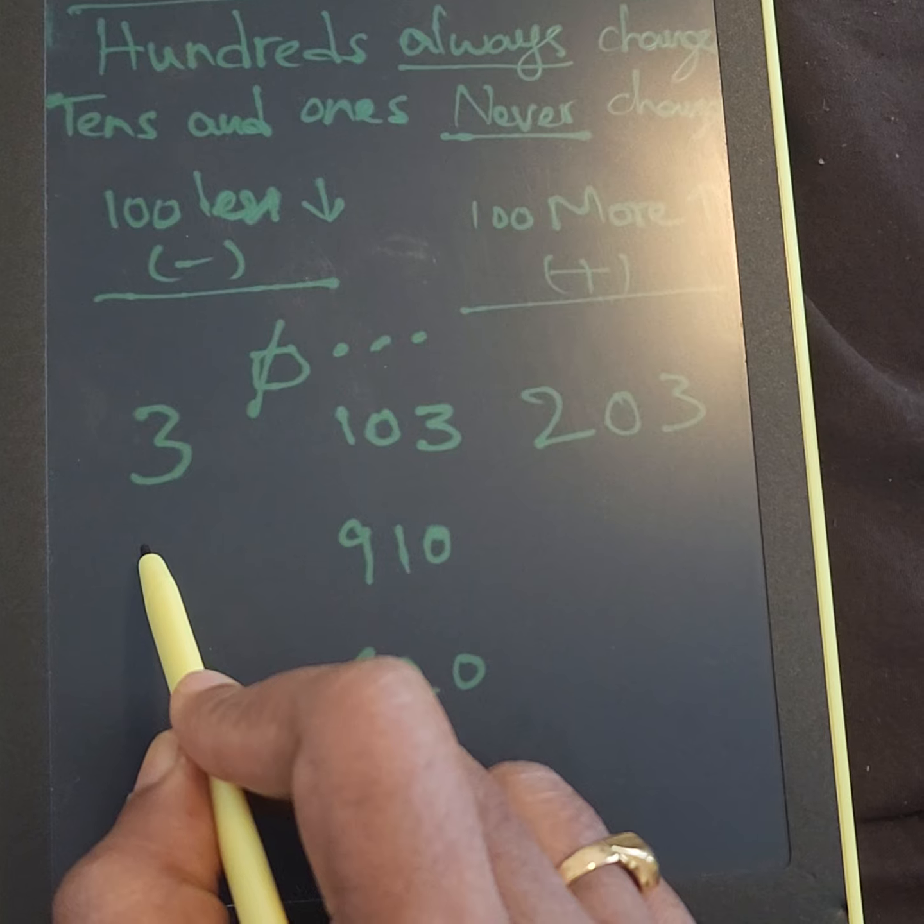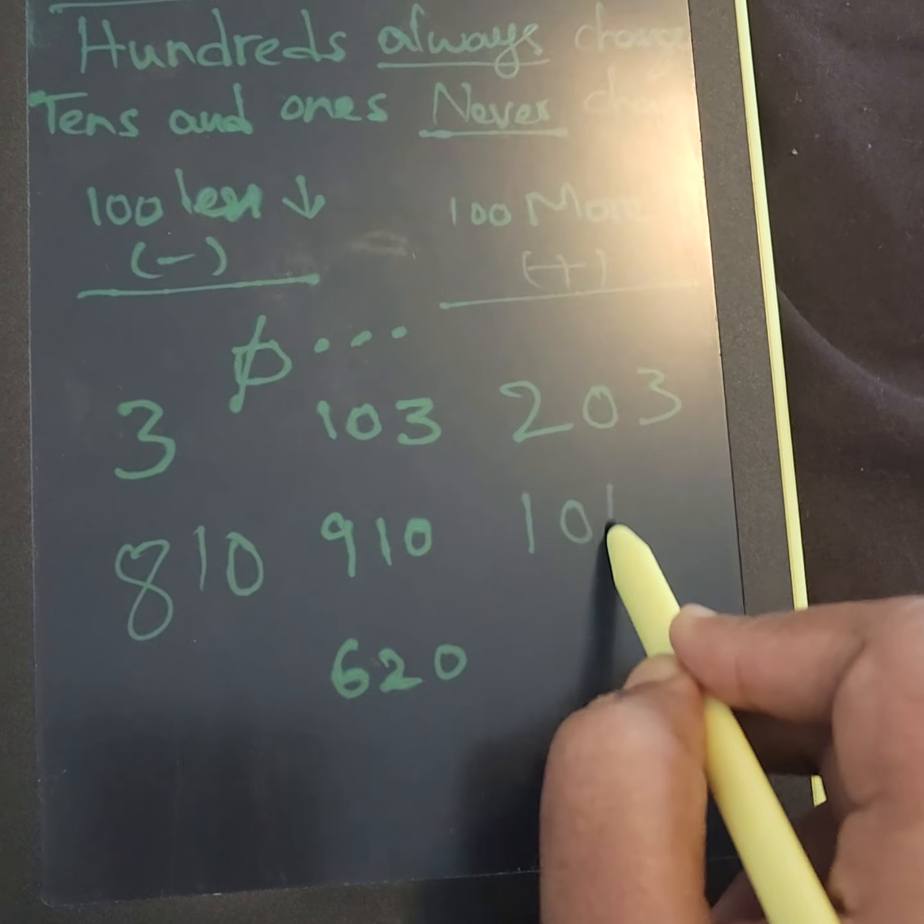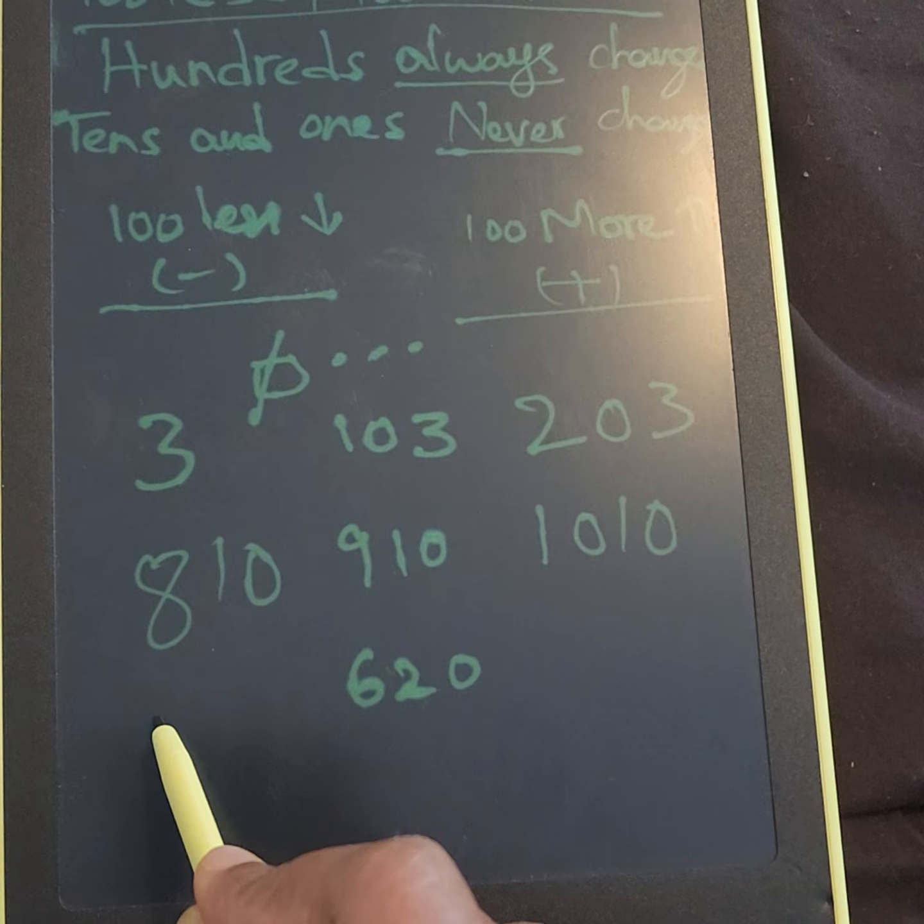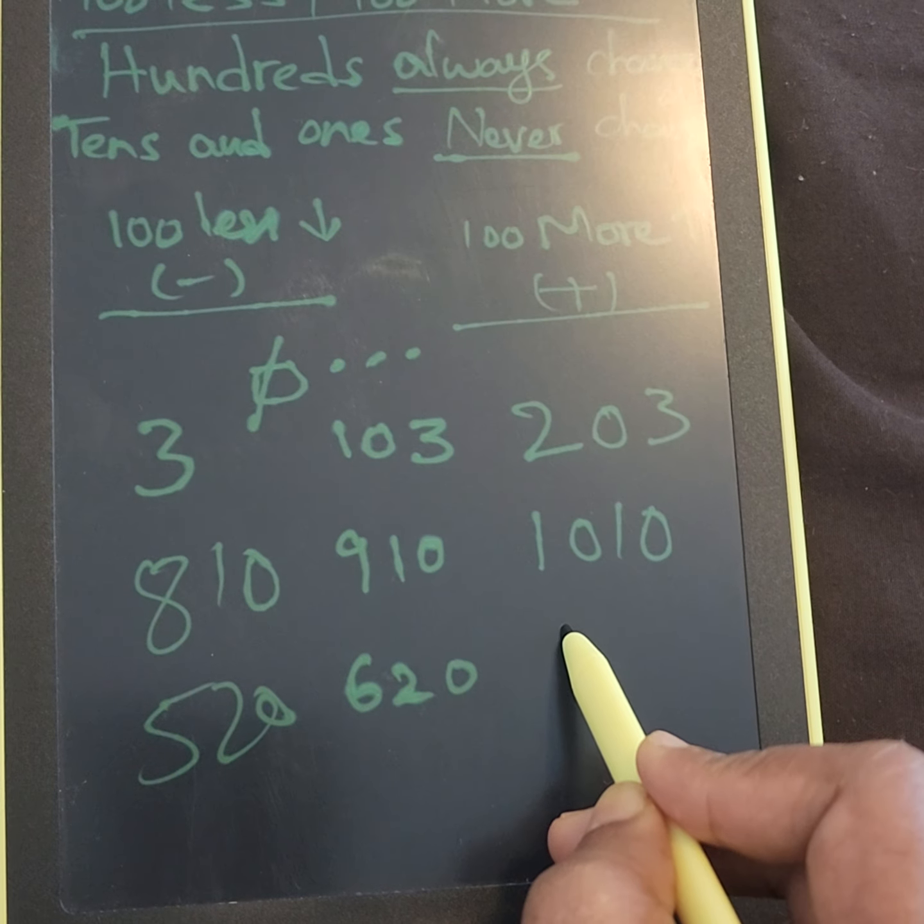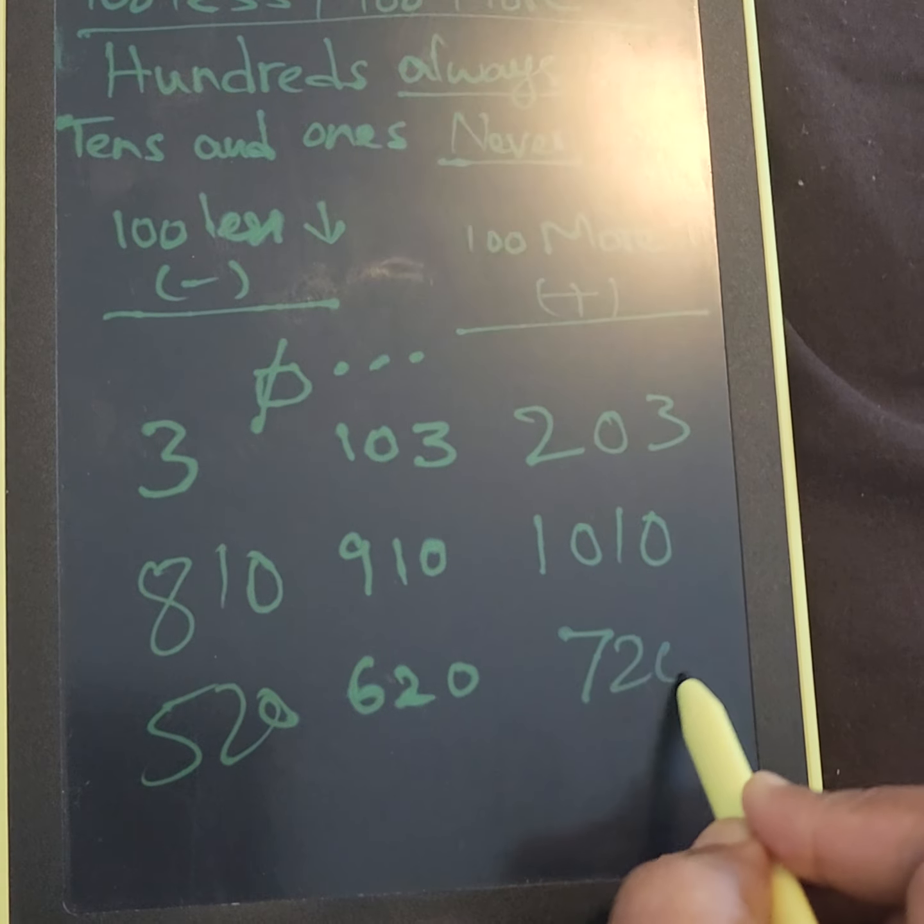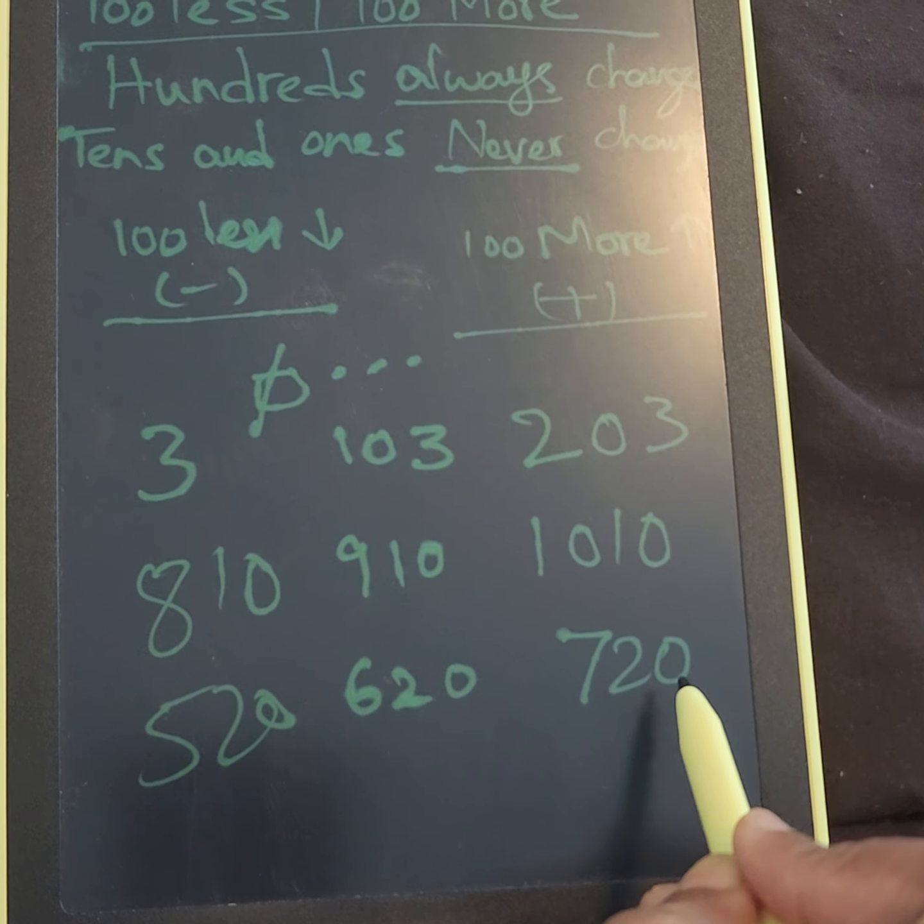Let's see: hundred less of 910 is 810, hundred more is 1010. Hundred less of 620 is 520, and hundred more of 620 is 720. Always see, tens and ones place remains the same.